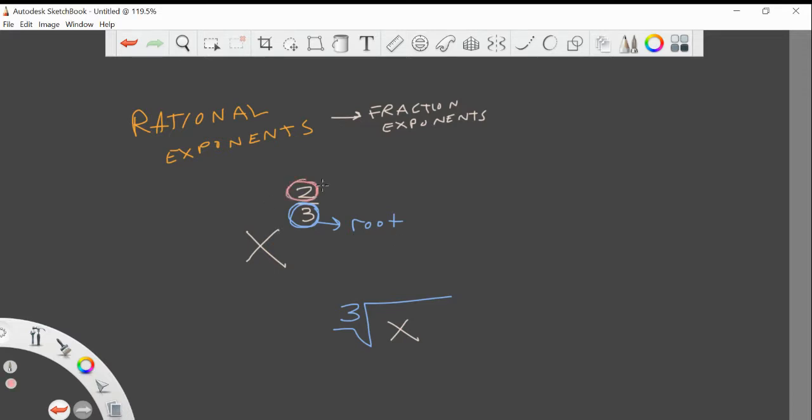The top is the power, or the exponent, however you want to think about it. And so this is x to the power of two, or x squared. So put the two there. And that's it. That's the entire thing of rational exponents. That's the whole thing. If you remember that the bottom number is the root, and the top number is the power, you're done.